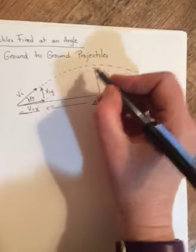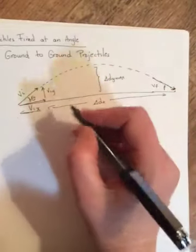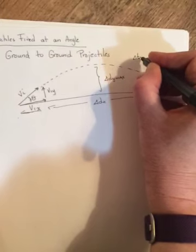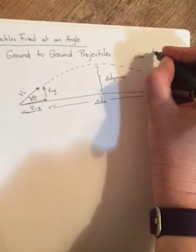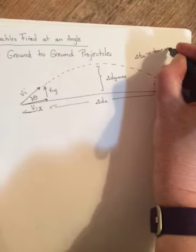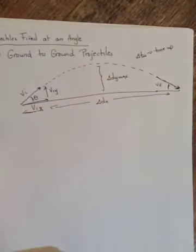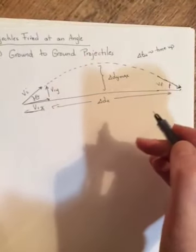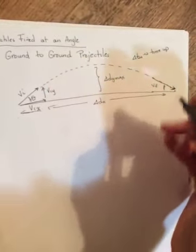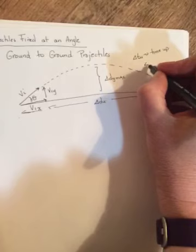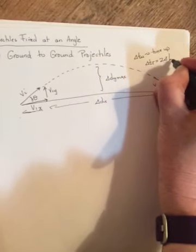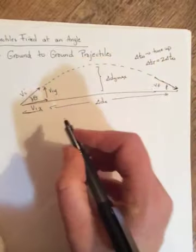And that delta DY max happens smack dab in the middle. It happens at the half time. We will call that time delta TU, the time it takes to go up. And we'll do that because when we get to non-ground-to-ground projectiles, there will still be a time that it will take to go up. It just won't be the half time. So in this case, delta T total will simply be equal to 2 times delta TU.